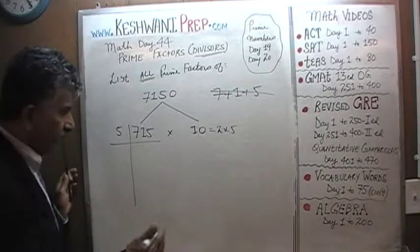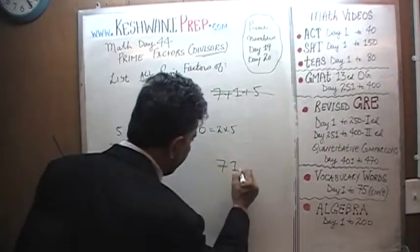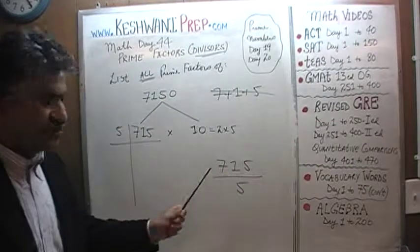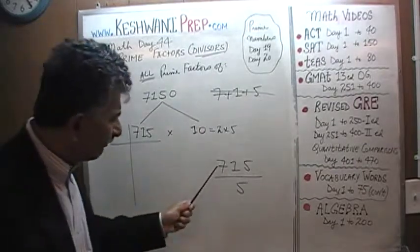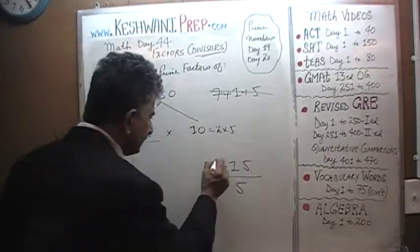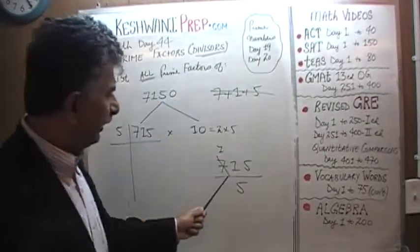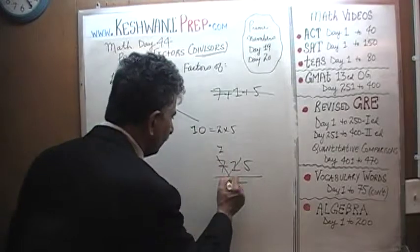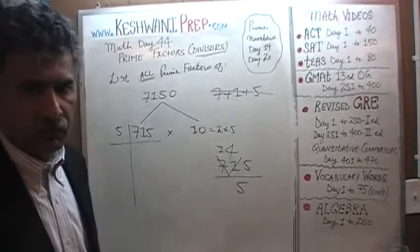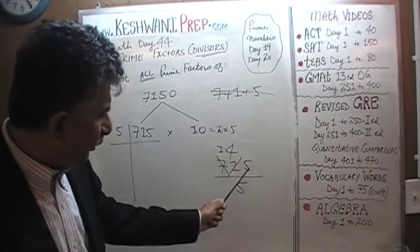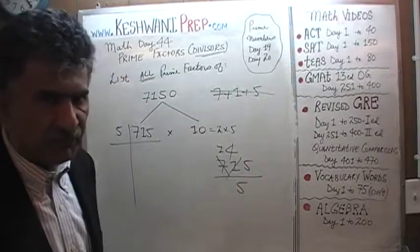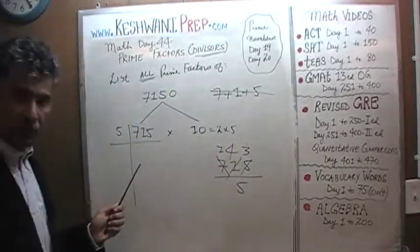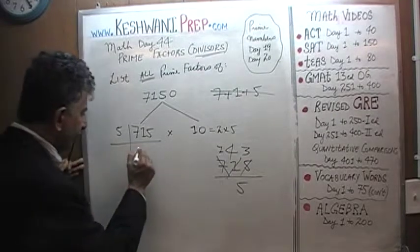We are going to divide 715 by 5. How many 5s does 7 have? 7 has one 5. The remaining 2 goes and joins the 1 to become 21. 21 has four 5s. Four 5s are 20. The remaining 1 goes and joins the 5 to become 15, and 15 has three 5s. So 715 divided by 5 is 143.